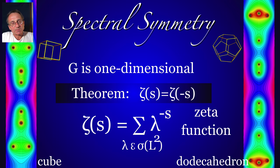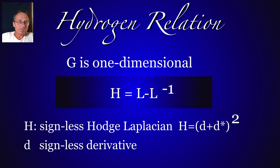For one-dimensional complexes, there is a spectral symmetry. So this is best explained with a zeta function. The zeta function of a Laplacian is the sum of the eigenvalues to the minus s. Here we take the eigenvalues of L squared, so that we have positive eigenvalues. That's the functional equation.